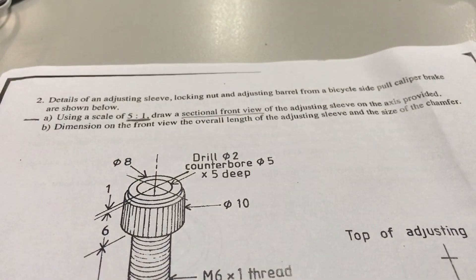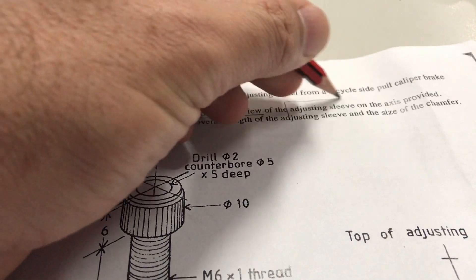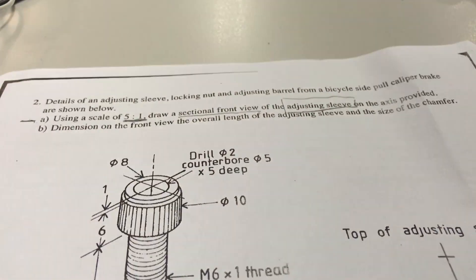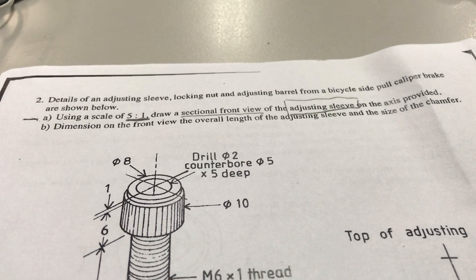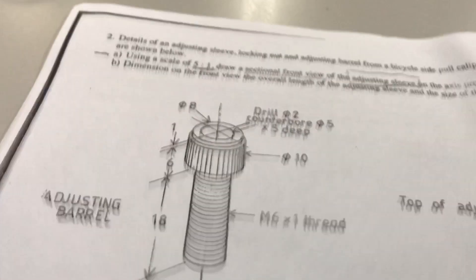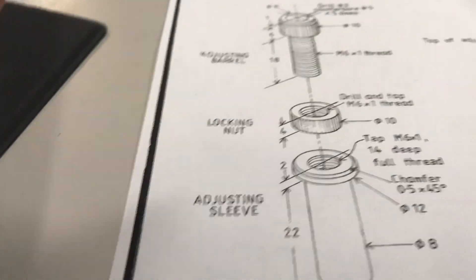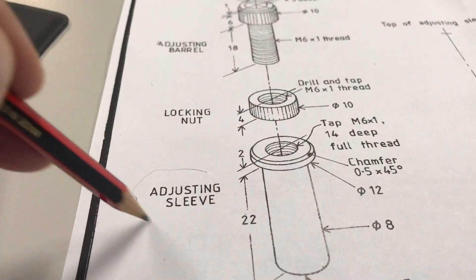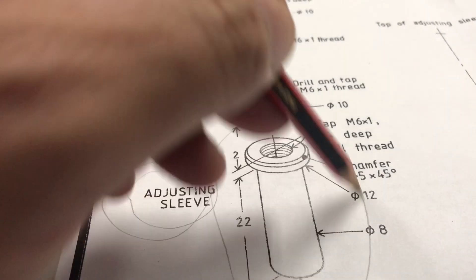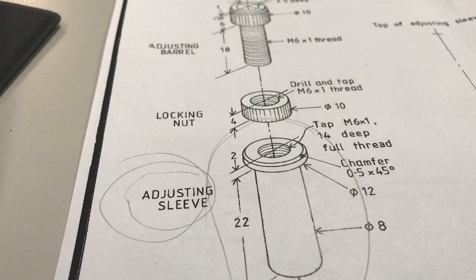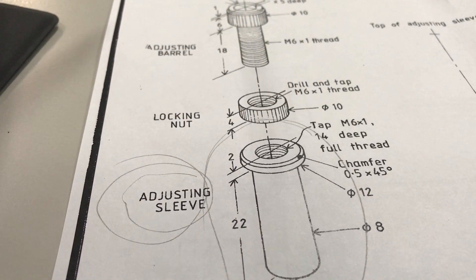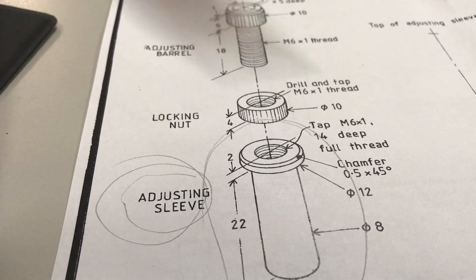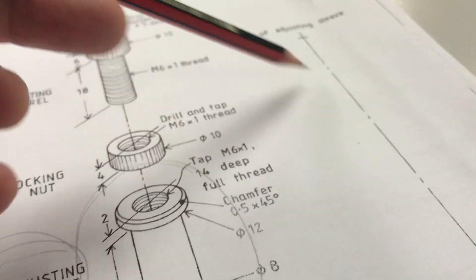So if you started this question and tried to do the whole thing, you'd be wasting a huge amount of time and making your life very difficult. You can see here this diagram is exploded out, and the adjusting sleeve is this part here. So it's this part here that we're dealing with that we want to actually draw. That's going to make our life a lot easier. On the axis provided, we know the axis is over here.